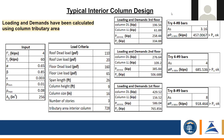Here we're talking about the typical interior column design. We have our inputs, load criteria, and loading demands. I completed the load demands for the first, second, and third floors, then calculated the capacity at each floor and compared it to the demands, making sure capacity was greater than demand.